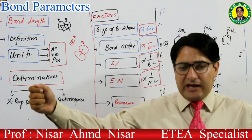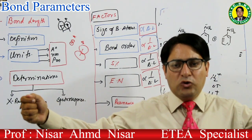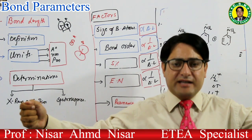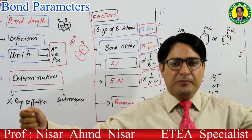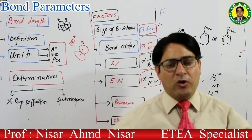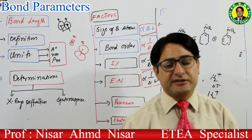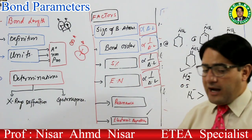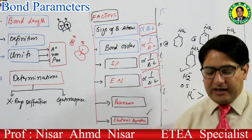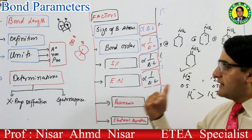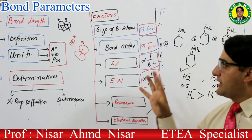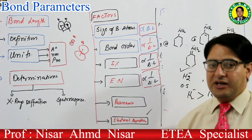یاد رکھنا: bond length اور bond energy کا بھی inverse relation ہوتا ہے — bond length زیادہ ہوگی تو اسے توڑنا آسان ہوگا، bond energy کم ہوگی۔ آپ نے صرف یہ دیکھنا ہے کہ کن کا direct relation ہے اور کن کا inverse relation ہے۔